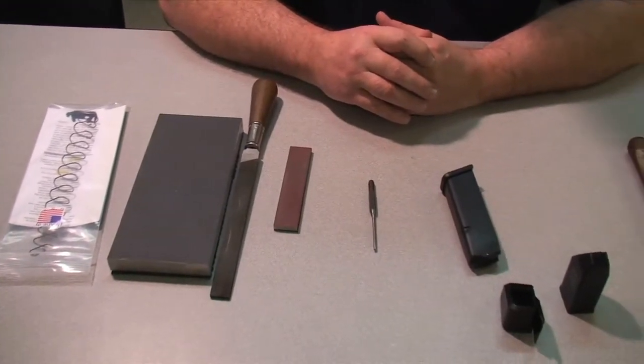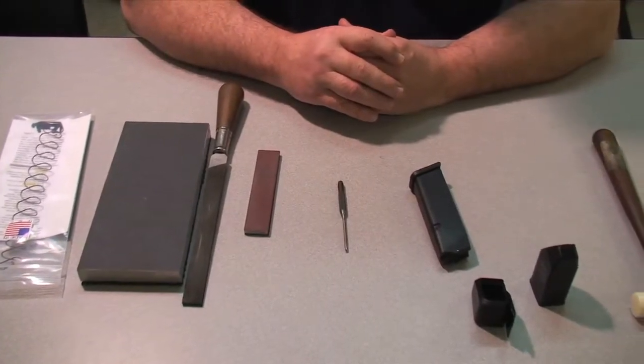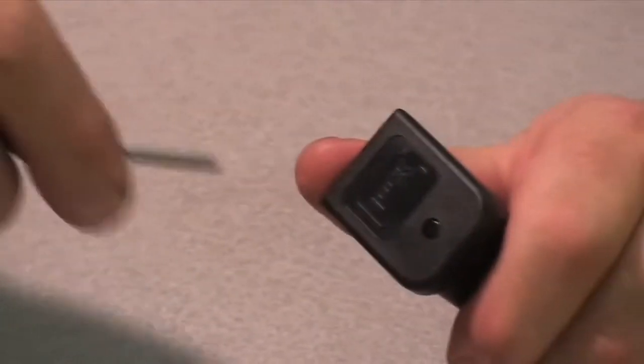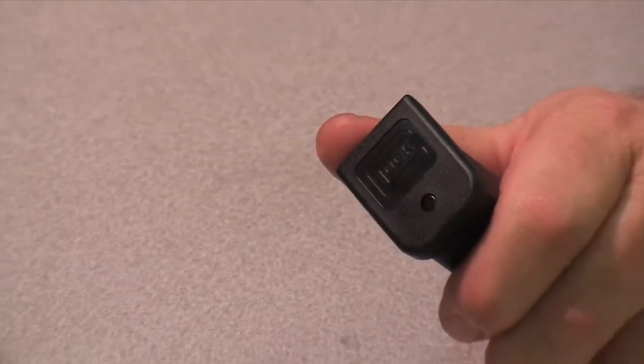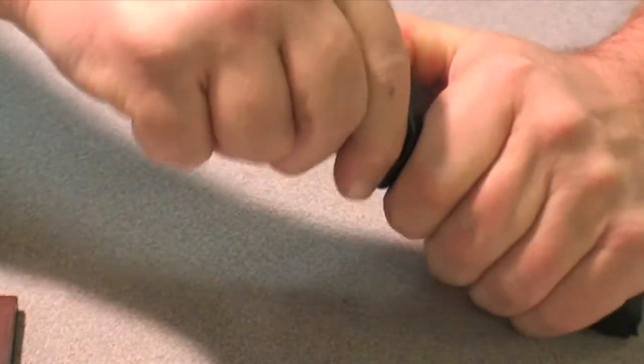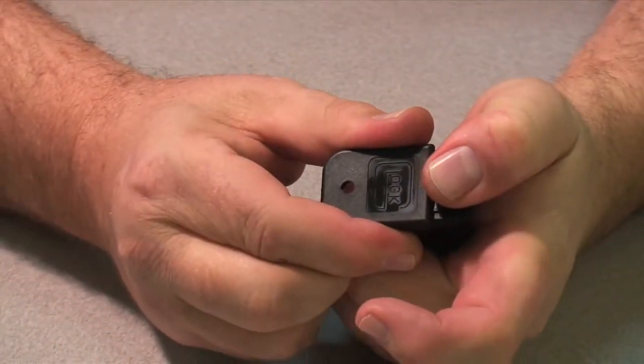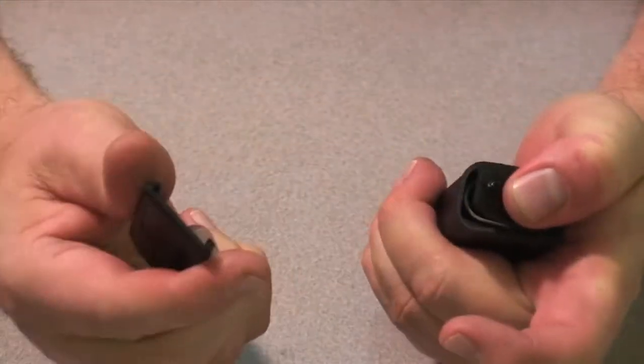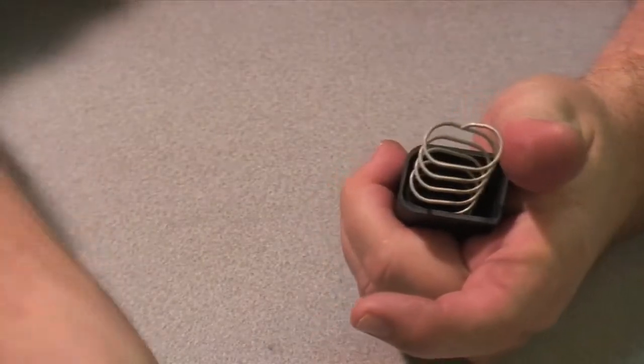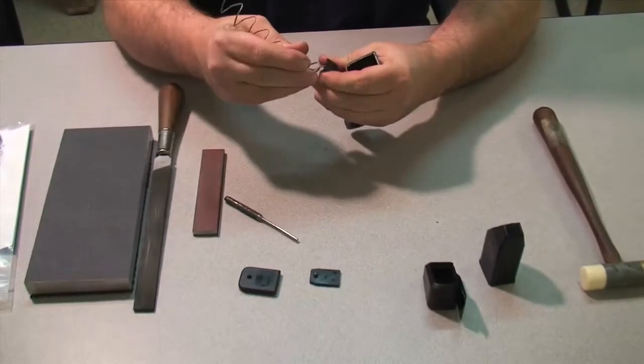The next step is going to be disassembling the factory Glock magazine, removing the retainer plate and the base pad. That's simply depressing in with a small punch, a retainer plate, pushing it forward, sliding it off. Always face this away from your face so the spring doesn't hit you in the head.